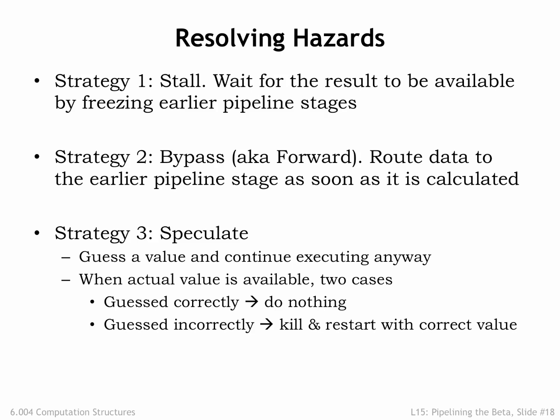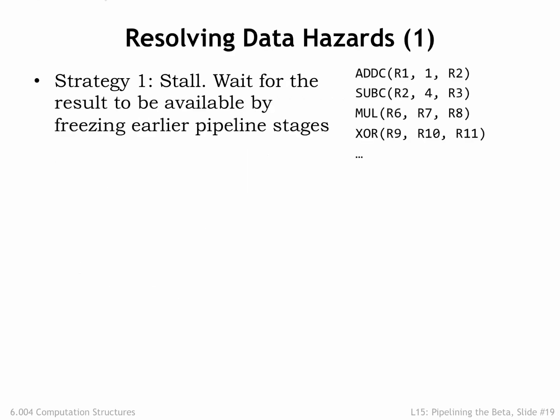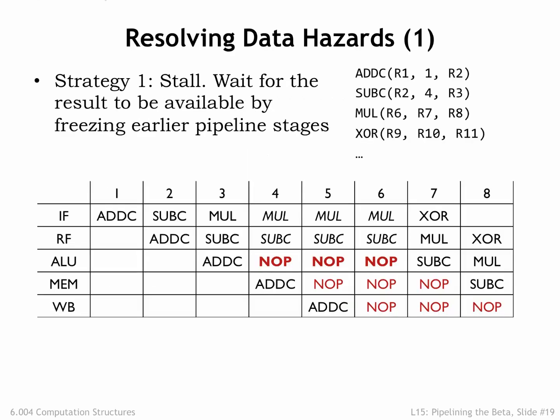Let's see how the first two strategies work when dealing with our data hazard. Applying the stall strategy, we need to stall the SUBC instruction in the RF stage until the ADDC instruction writes its result in R2. In the pipeline diagram, SUBC is stalled 3 times in the RF stage until it can finally access the R2 value from the register file in cycle 6. Whenever the RF stage is stalled, the IF stage is also stalled, as you can see in the diagram.